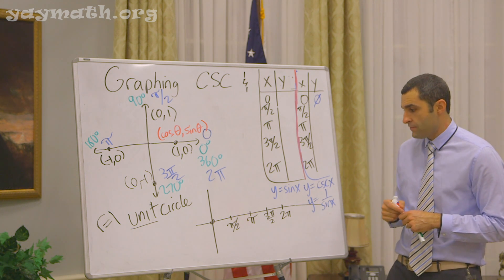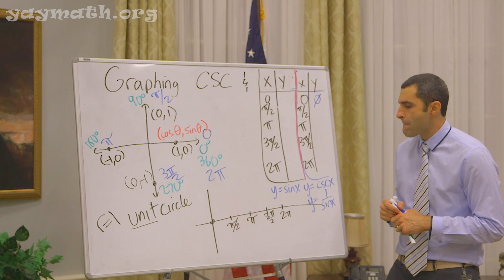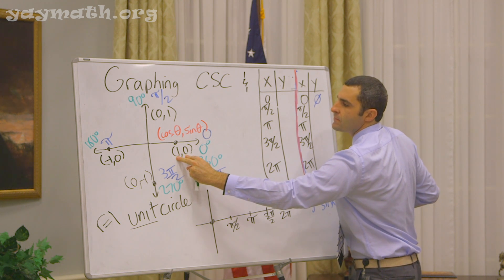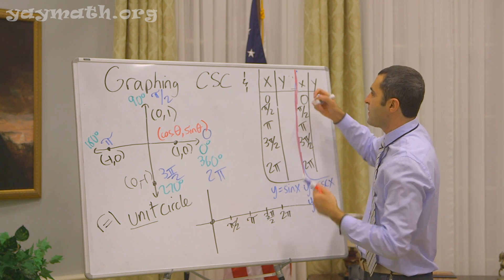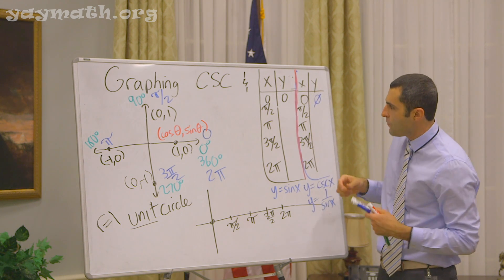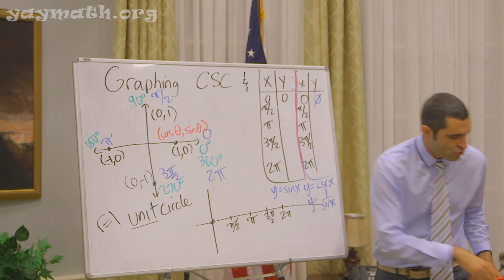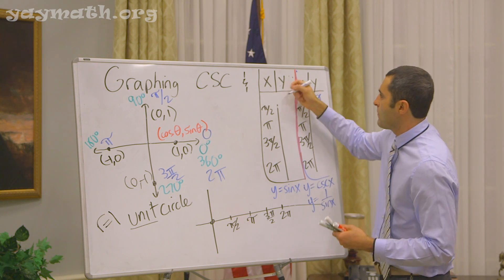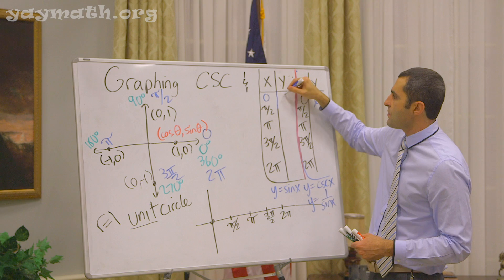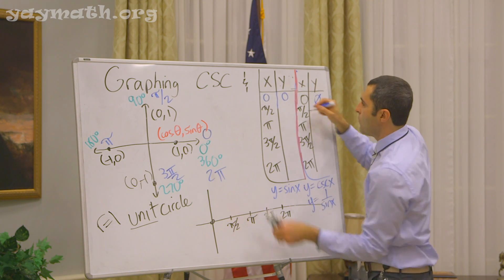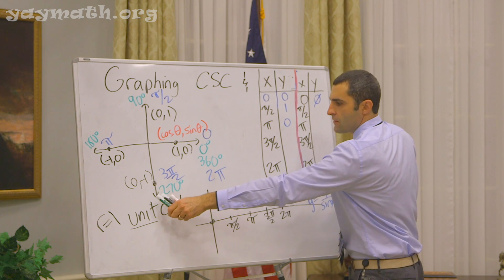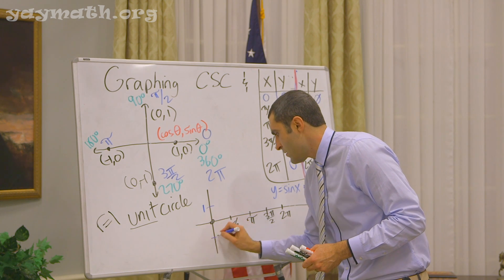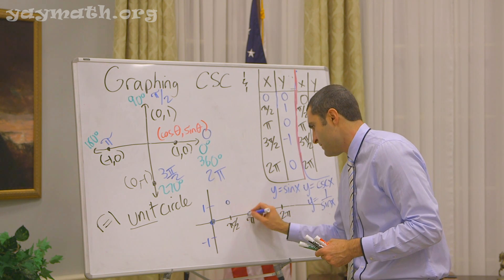What is the sine of zero? Zero — right here. The more you apply yourself the more you're going to get used to it. We'll do these in blue. Sine of zero is zero. Sine of pi over two is one. Sine of pi is zero. Sine of three pi over two is negative one. Sine of two pi is zero. Put the points down.